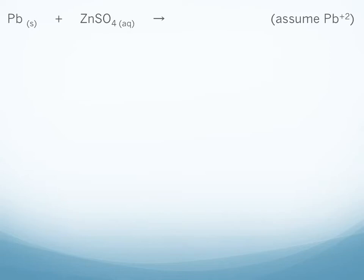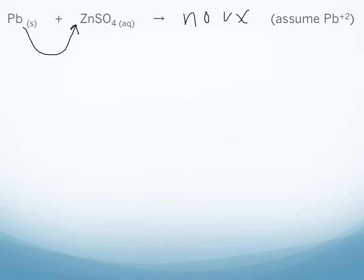Here we have solid lead — that's our metal — and we have an aqueous solution of zinc sulfate. If this is going to be a single replacement reaction, the lead will come in and replace the zinc, so the metal replaces the metal ion. We have to check our activity series. If you find lead, lead cannot replace zinc — lead can only replace metals that are below it on the activity series, and zinc is above it. So this is not a reaction, and we won't predict products.